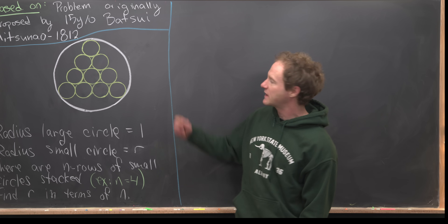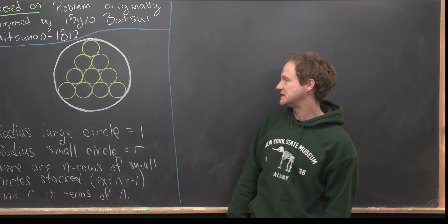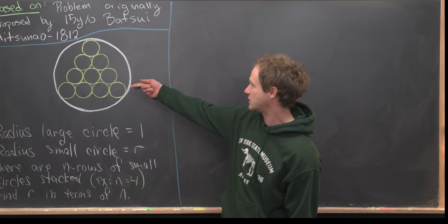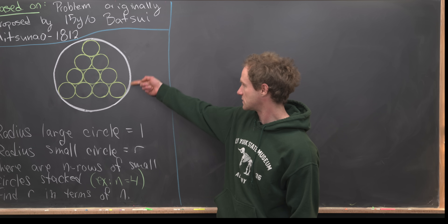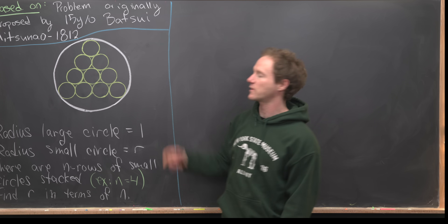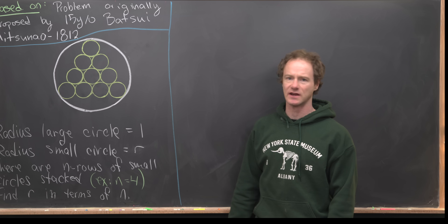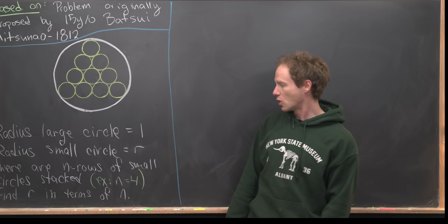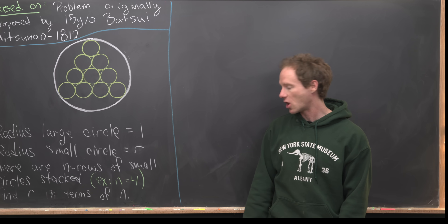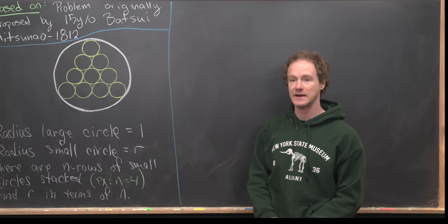We have n rows of small circles stacked. Here I have the example where n equals 4. Notice I've got a first row of small circles, second, third, fourth — they're stacked in this triangular shape. Our goal is to find r in terms of n.